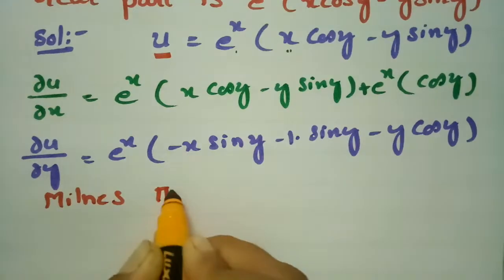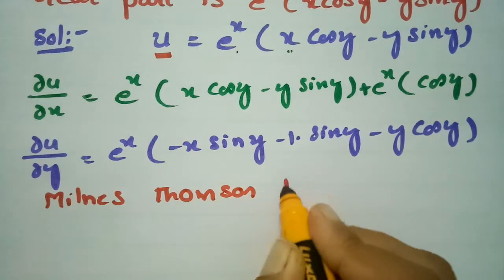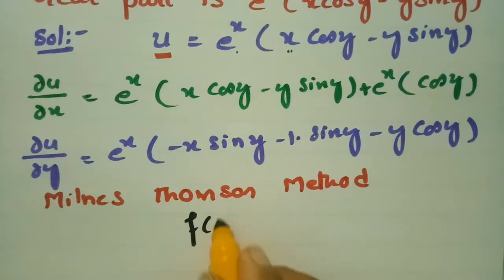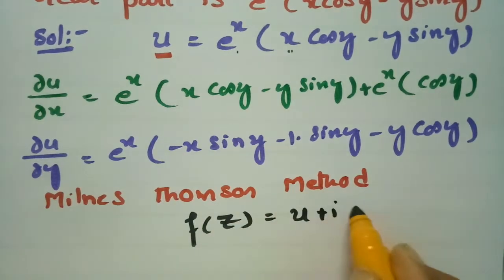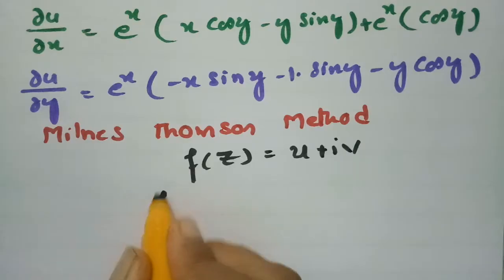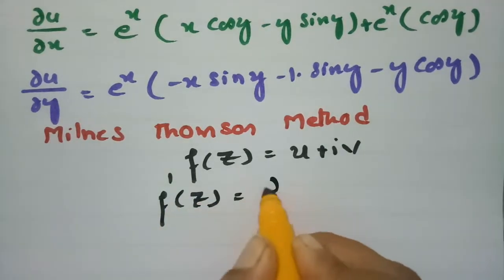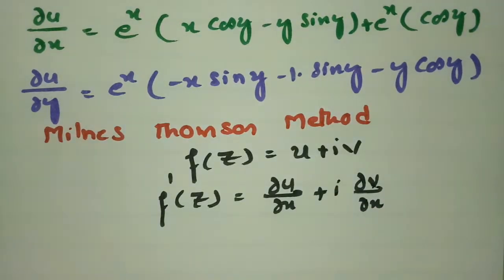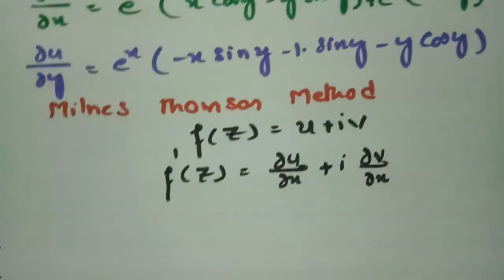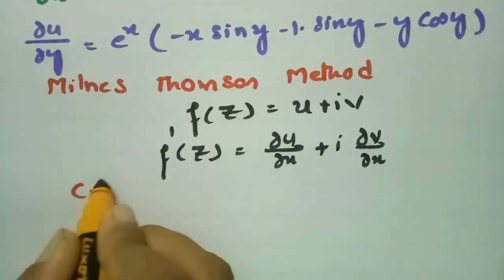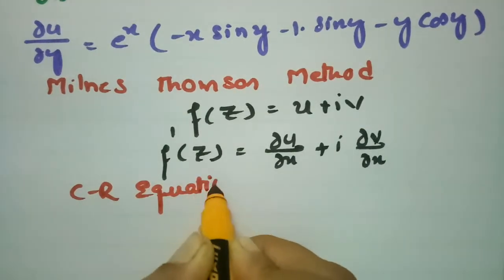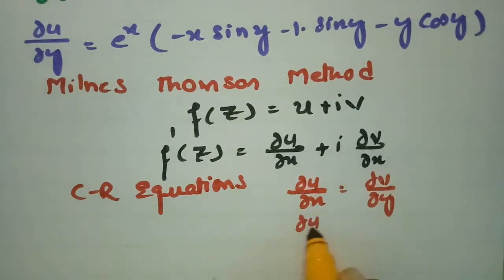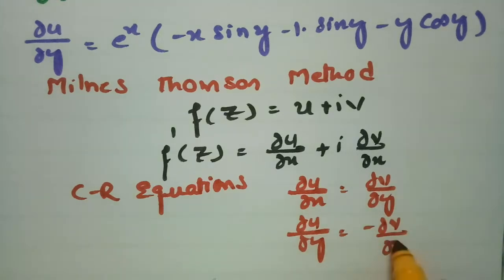According to the Milne-Thompson method, f(z) = u + iv. If I make a derivative with respect to x, that is f'(z) = ∂u/∂x + i·(∂v/∂x). Now I am going to use the Cauchy-Riemann (CR) equations: ∂u/∂x = ∂v/∂y and ∂u/∂y = −∂v/∂x.